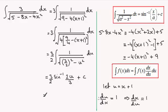I'm filling back now with what u is, x plus 1. We finish on 3 over 2 then times the inverse sine or arc sine, it's up to you if you want to write that. 2 times x plus 1 all over 3 plus the constant of integration plus c. And there you go.